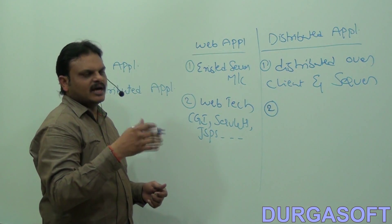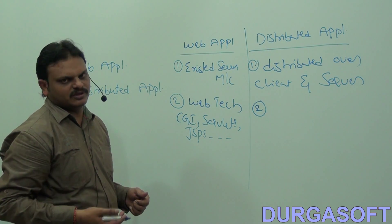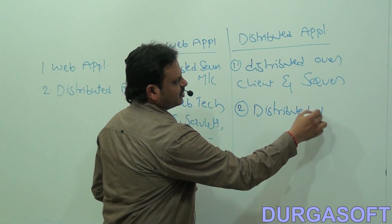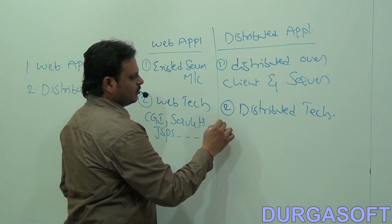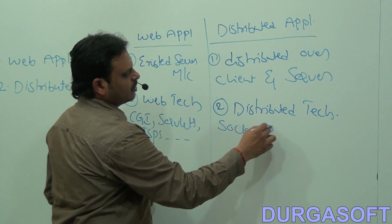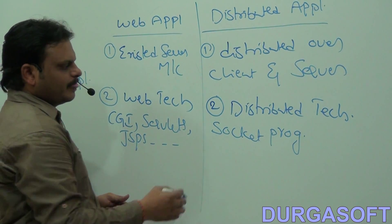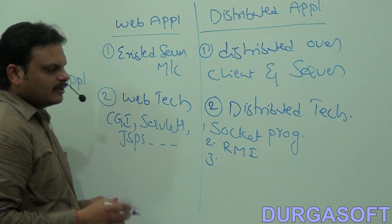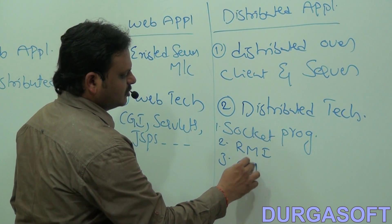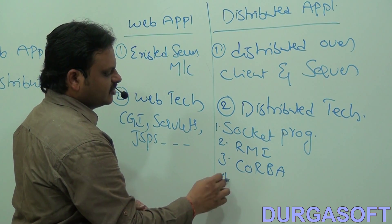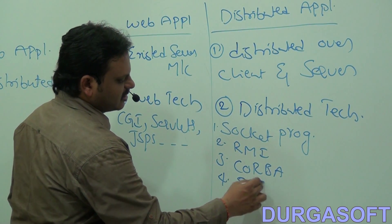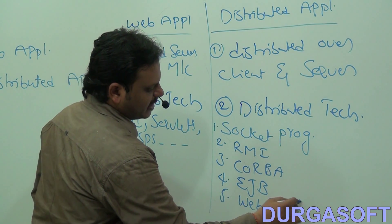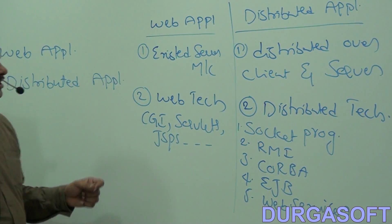In the same way, to design distributed applications, we use another set of technologies called distributed technologies. Examples include socket programming, RMI, CORBA, EJBs, and web services.